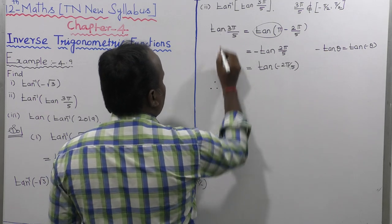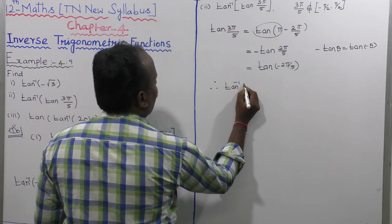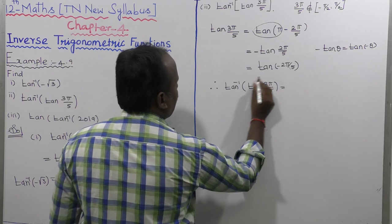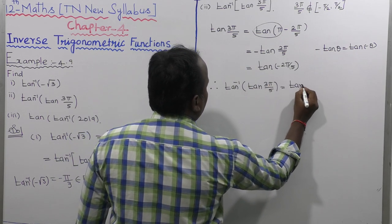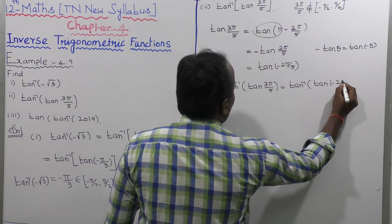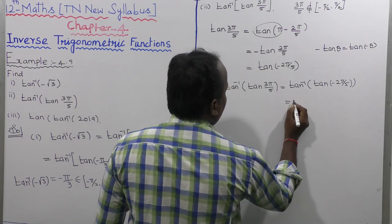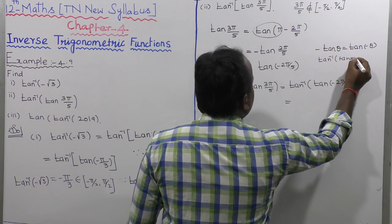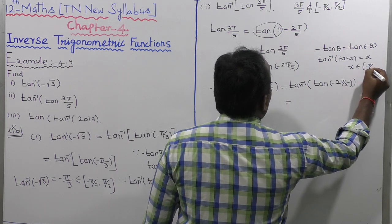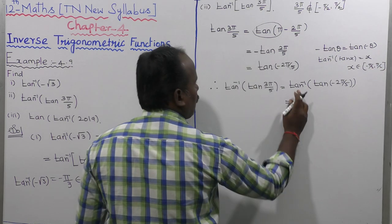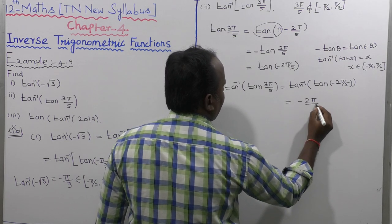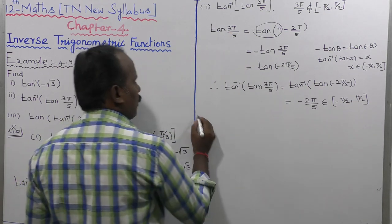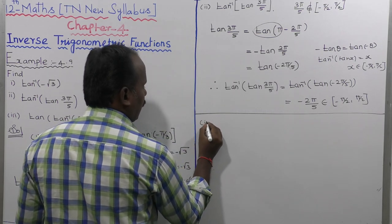Therefore the given value tan inverse of tan(3π/5) is replaced by tan inverse of tan(−2π/5). Using the formula tan inverse of tan(x) = x, where x belongs to (−π/2, +π/2), and since −2π/5 belongs to (−π/2, +π/2), the second subdivision answer is −2π/5.